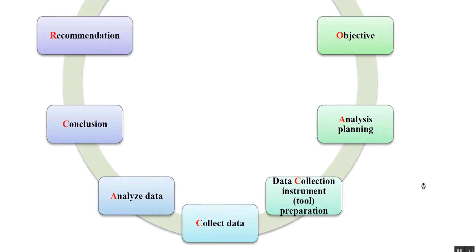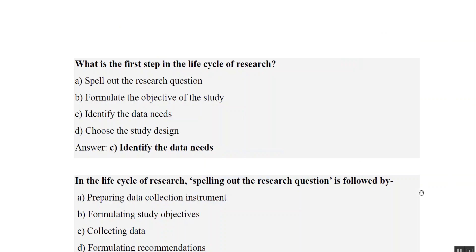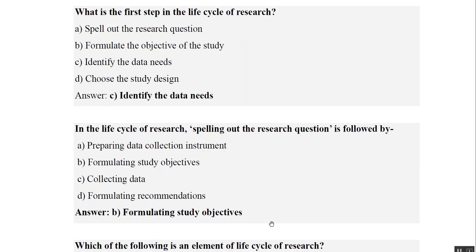Now let us look at practice questions. What is the first step in the life cycle of research? The answer is to identify the data needs. Next question: in the life cycle of research, spelling out the research question is followed by what? The first step was identify data needs, second was formulate the research question, and from the research question we formulate the study objective. So spelling out the research question is followed by formulating the study objective — answer B.